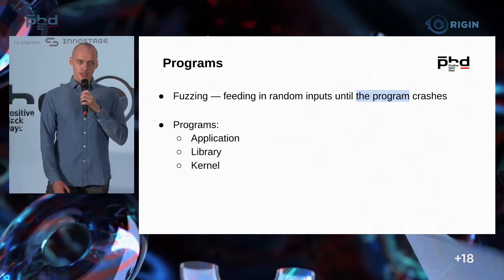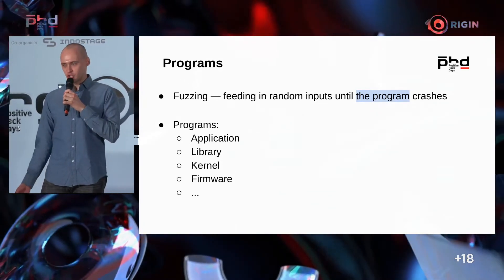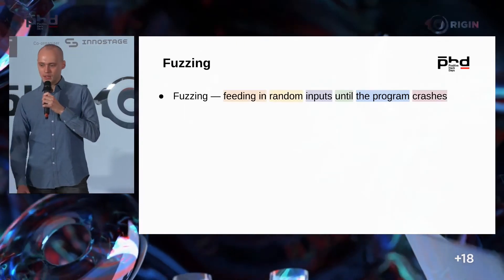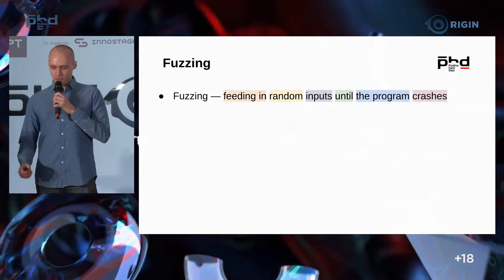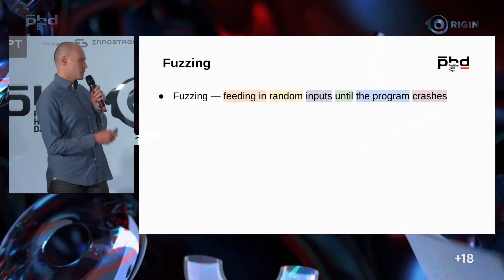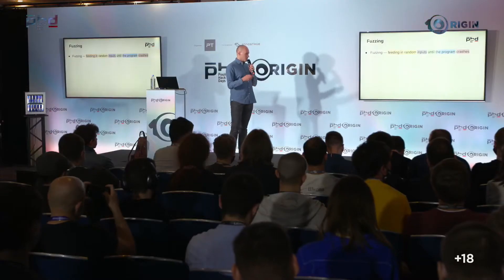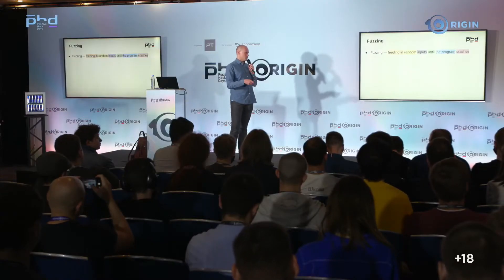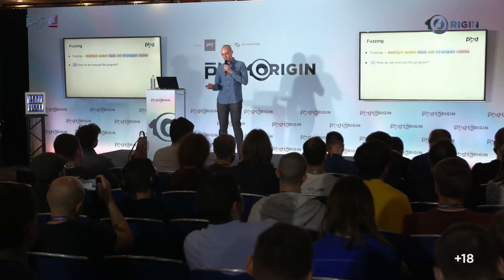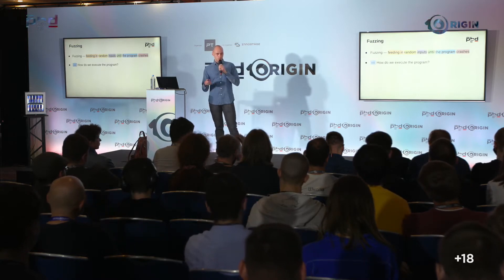Fuzzing is feeding random inputs until the program crashes. To create a fuzzer, we need to answer several questions: What kind of programs can we fuzz — applications, libraries, kernels, firmware? How do we execute it? If it's just a user space program, we just run it. If it's firmware, we need a more sophisticated approach.